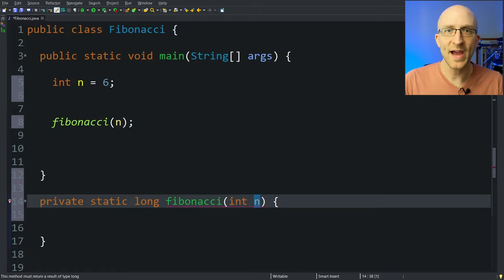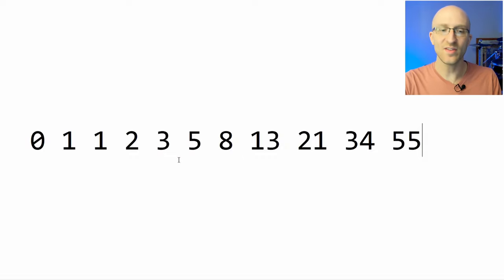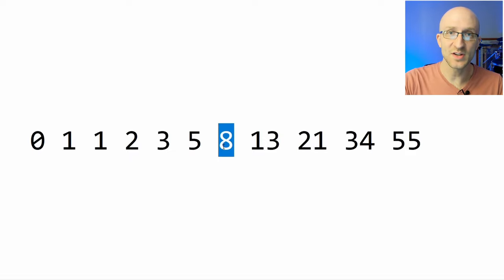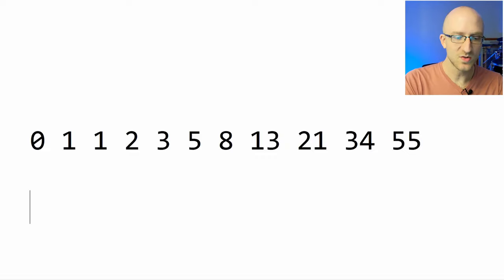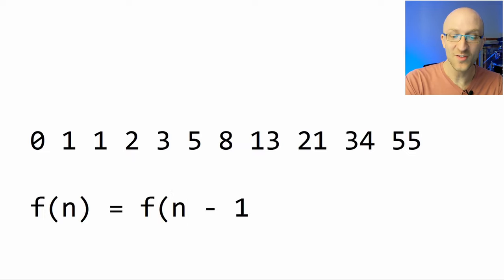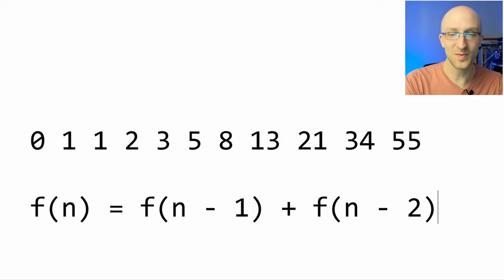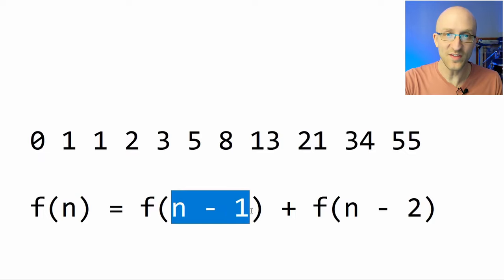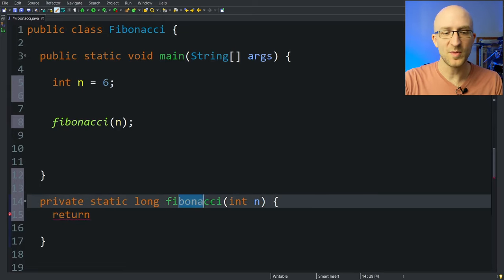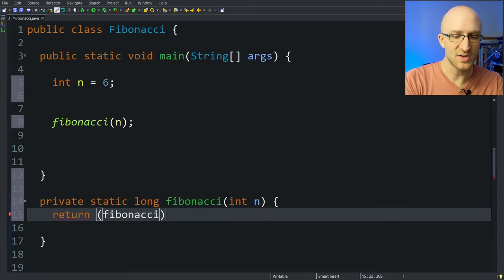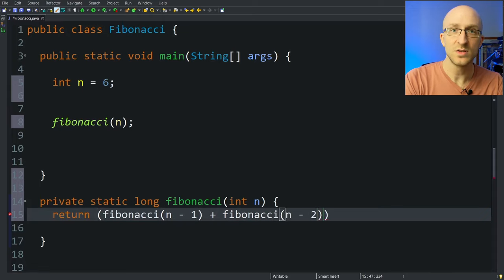So let's think through for a second what our algorithm actually has to do. When we want to generate the nth Fibonacci number — let's say our n is 6 — the 6th Fibonacci number is 8, but how is that calculated? The 6th Fibonacci number is actually just the 5th Fibonacci number plus the 4th Fibonacci number. So we can say that the nth Fibonacci number is just equal to the n minus 1th Fibonacci number plus the n minus 2 Fibonacci number. So we can code that pretty easily: all we have to do is return Fibonacci(n-1) plus Fibonacci(n-2). But is it really that simple?